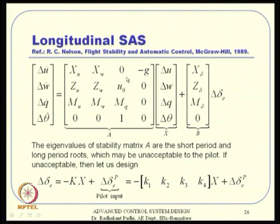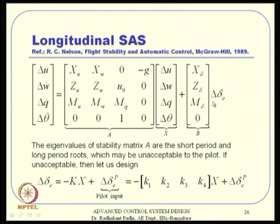The flight dynamics in longitudinal mode can be separated from the full nine-variable flat-earth model into 4 + 4 variables. The four longitudinal variables are U, W, Q, and theta. Longitudinal dynamics are largely governed by thrust and elevator manipulation. In a linearized model, thrust is assumed constant since it cannot be manipulated rapidly, so only elevator is manipulated. This gives the linearized longitudinal model.